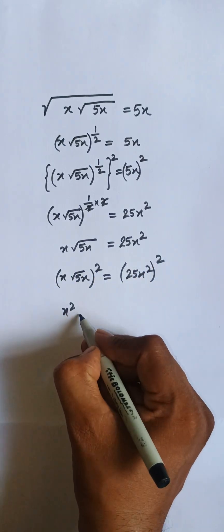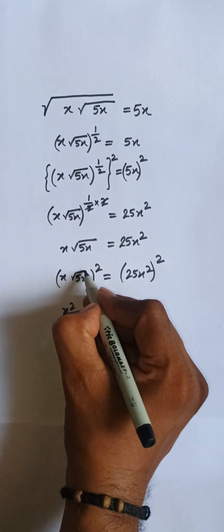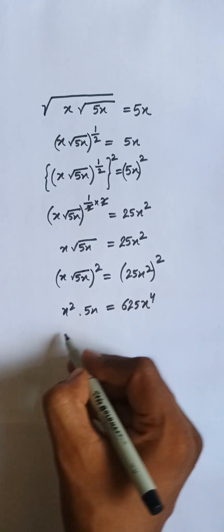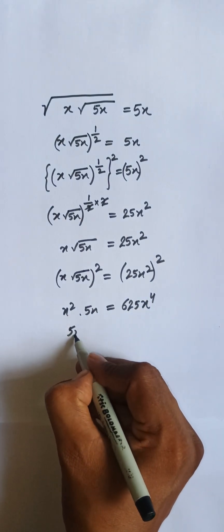So we have x² times 5x, and here we have 625x⁴. This is 5x³